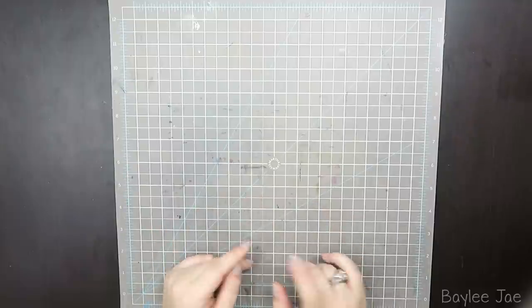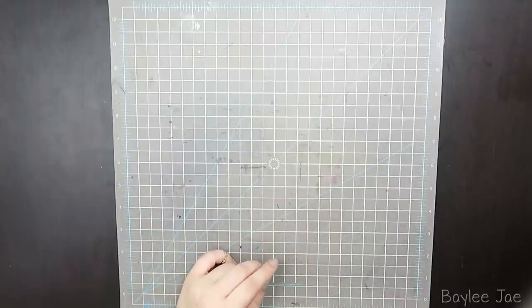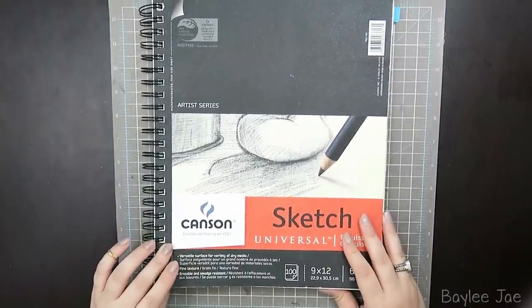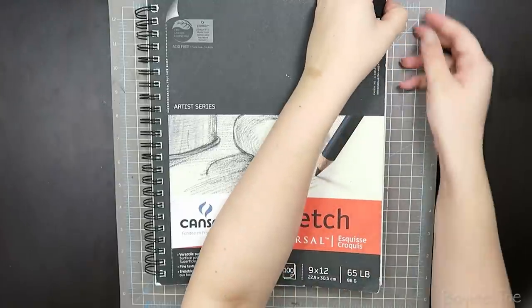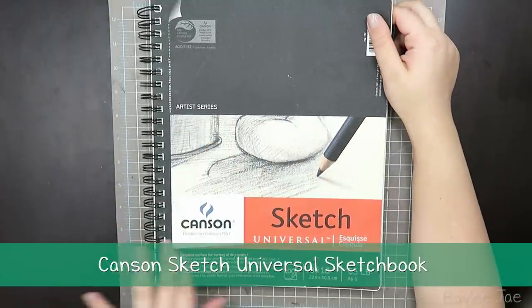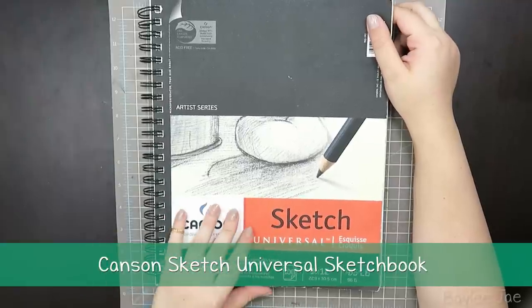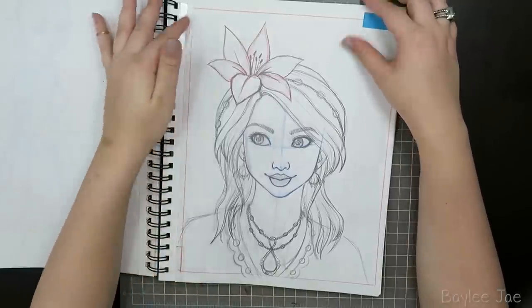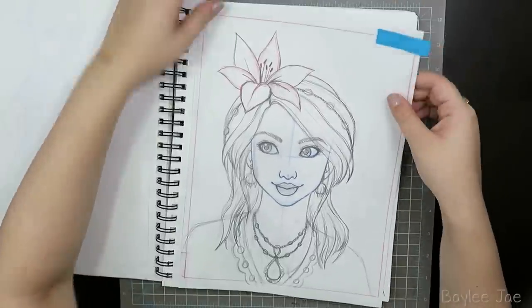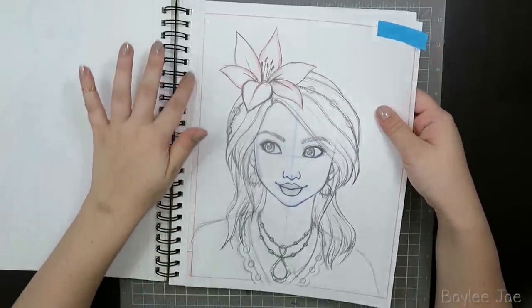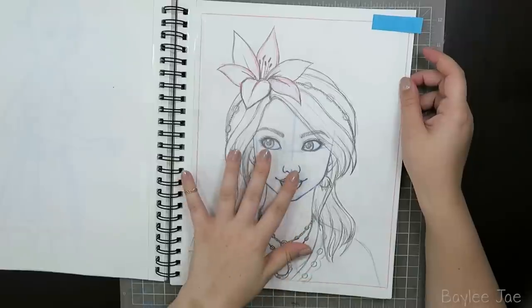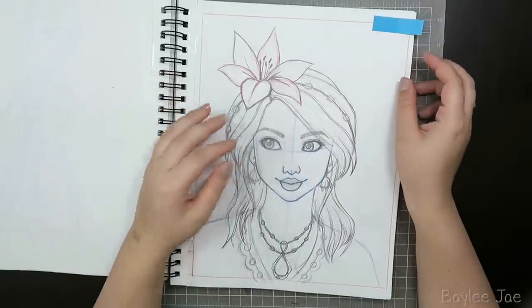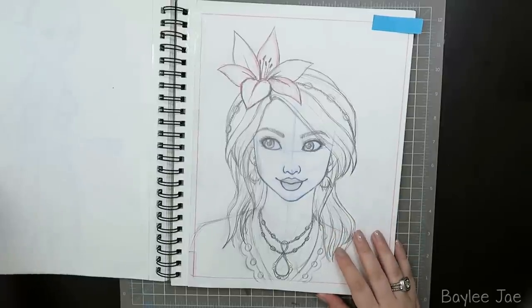So starting with paper since that's where art starts. This is kind of my go-to sketchbook right now for when I do art for videos because this has perforated paper - it's the Canson Sketch Universal. I don't really like these coil rings though. The pages are perforated and so you can see that I've torn out this page before and now it's taped back in. I wanted to sketch it in here and then tear it out so I could ink it onto a new piece of paper and then put it right back into the sketchbook.